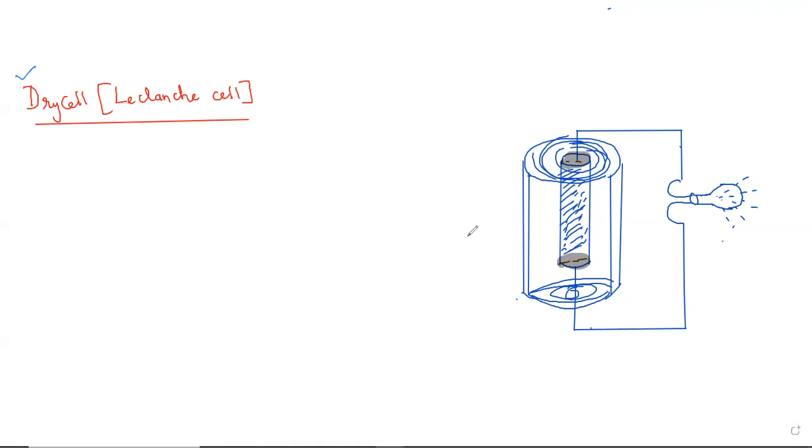Actually, this dry cell is also called a dry cell battery, it is also known as Leclanche cell. In this, a zinc container is present that acts as anode. So, this zinc container acts as anode. This is nothing but zinc, a negatively charged electrode plate.